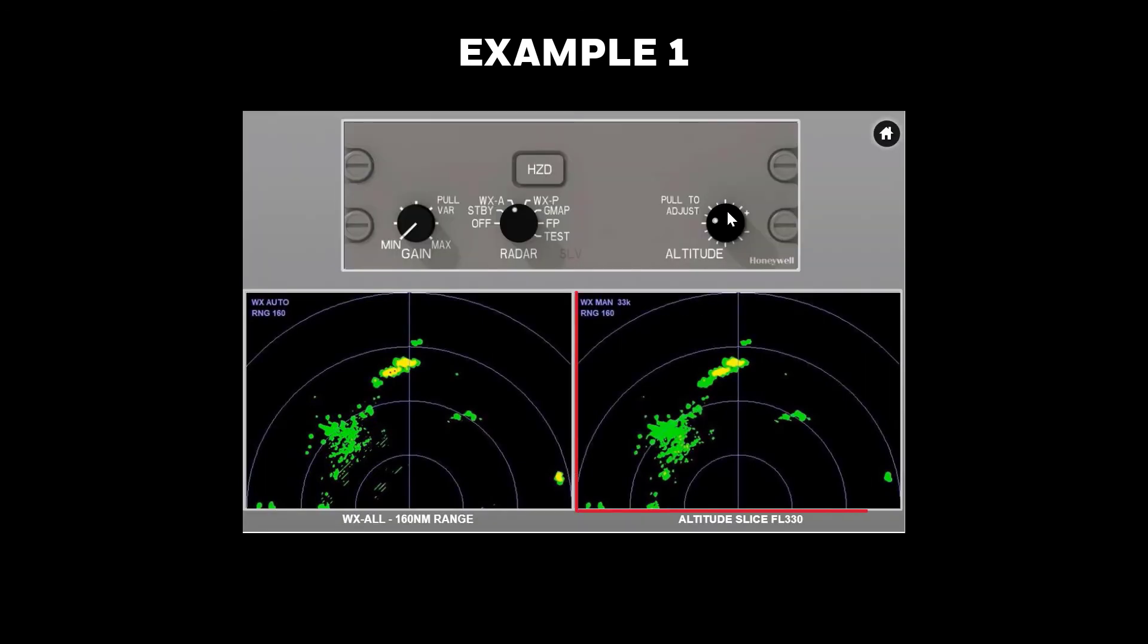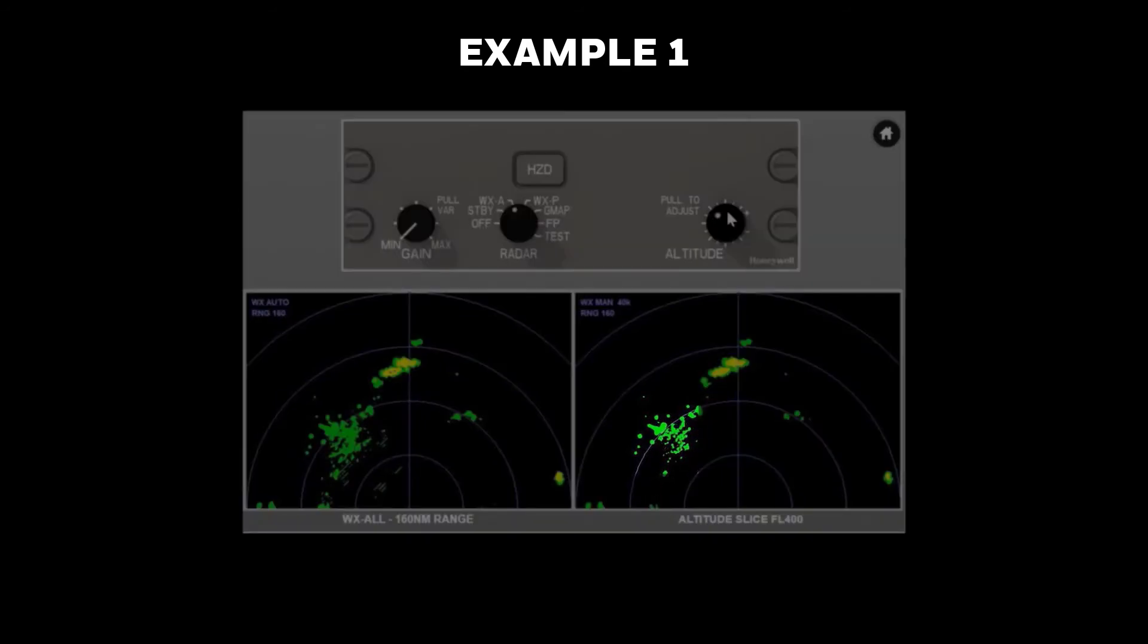We'll use the altitude knob to start looking at slices at 33,000 feet. Notice that an altitude slice at the aircraft's flight level of 40,000 feet indicates there is little reflectivity aloft in that area that would indicate a potential hazard. The convective area ahead is showing two distinct cells.